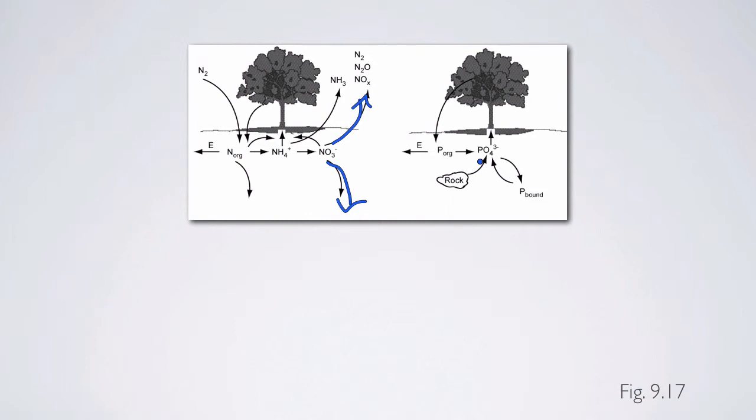So the phosphorus cycle, in many respects, is a lot simpler than the nitrogen cycle. We don't have to worry about atmospheric inputs as much, although dust in some systems can be an important form of phosphorus that's entering the system. We don't have to worry about differences in redox states either.